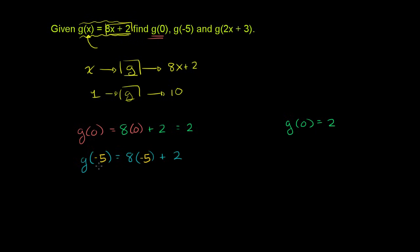Wherever we saw the x, we just replaced it with a negative 5. And this is just equal to 8 times negative 5, which is negative 40, plus 2, which is equal to negative 38. So we have g of negative 5 is equal to negative 38.